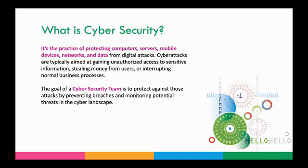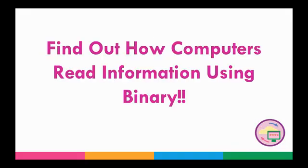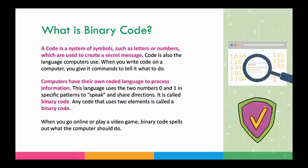On to activity number one. We're going to find out how computers read information using binary code. But first, a brief description of what binary code is. A code is a system of symbols such as letters, numbers, or special characters used to create a secret message. I bet many of us have made up secret codes or languages to pass secrets. Code is also used as a language for computers — when you write code on the computer, you give it commands telling it what to do. As smart as our devices are, computers still need a user to give them commands. To do this, we use code, specifically binary code.